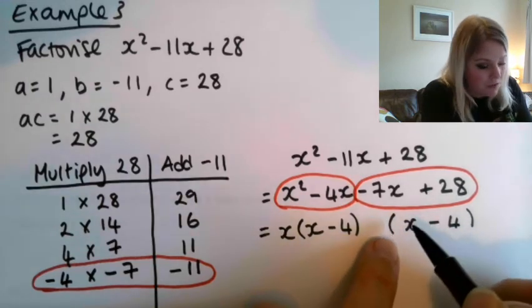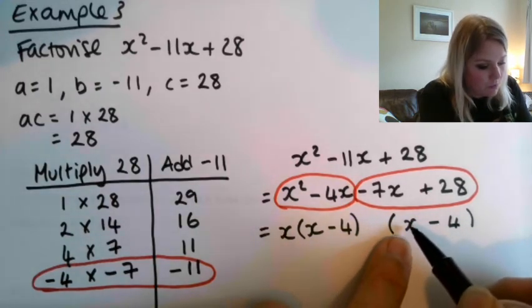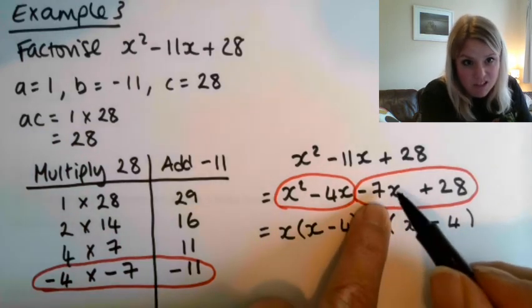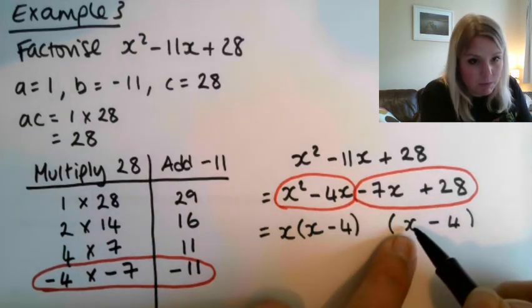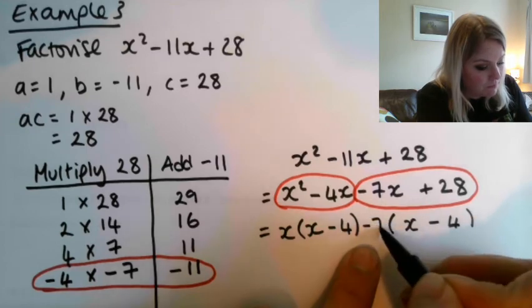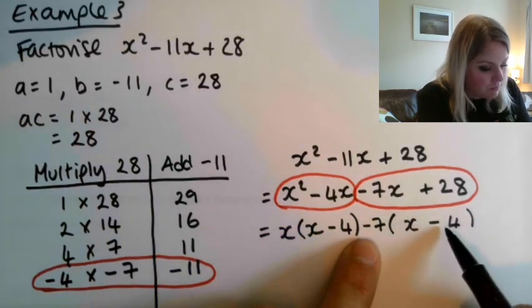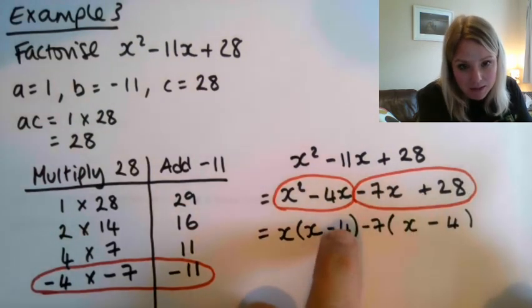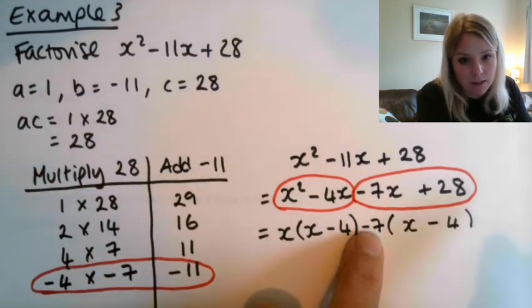So really, what I do then is look at this first term and I think, what will this have to be multiplied by to give me the equivalent term up here? So what does x have to be multiplied by to give me minus 7x? Well, it's minus 7. And then check it. Minus 7 multiplied by minus 4. Yes, that gives me plus 28. So you do need to be super careful with these negatives.